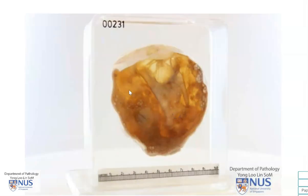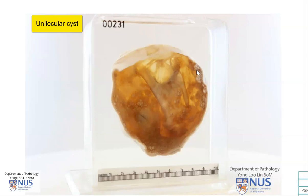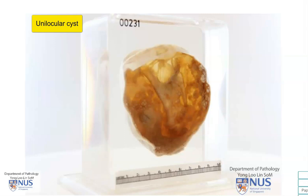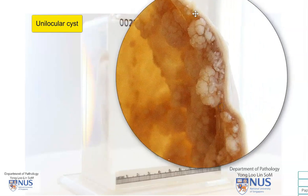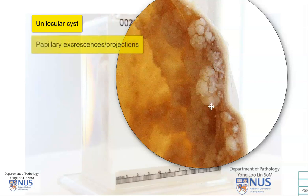Coming back around to look at the inner lining of the cyst, we can observe that this is a unilocular cyst. There is a single large locule, and I'm just going to zoom in on this area so we can see it a little bit better at an angle. Here we can see the cyst wall, which is relatively thin — a few millimeters thick — but there are these cauliflower-like papillary projections or excrescences that are protruding into the lumen of the cyst.